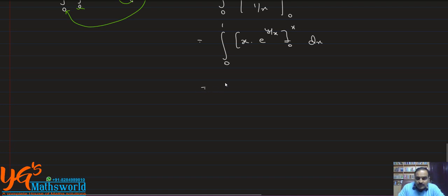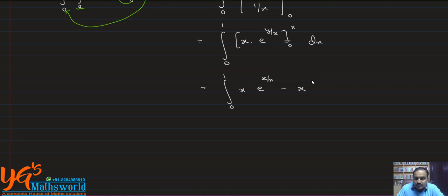From 0 to 1: x as it is, upper limit gives e raised to x over x, which is e, minus — x remains as it is — lower limit gives e raised to 0, which is 1. So the integral becomes 0 to 1 of x times (e minus 1) dx.